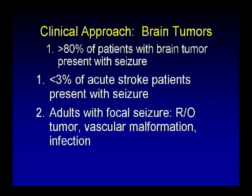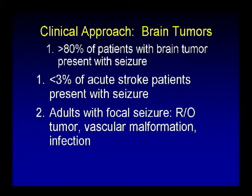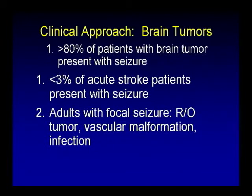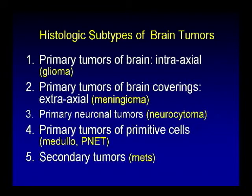This is the only clinical slide I have. Remember: if an adult patient presents to the ER with seizure, please do not think of stroke as your number one diagnosis. Patients with stroke very rarely present with seizure — less than 3%. When you hear 'adult with seizure,' think about a space-occupying mass, vascular malformation, or other systemic causes. Seizure is a very significant sign in adults — if they present with seizure, think about a brain tumor.